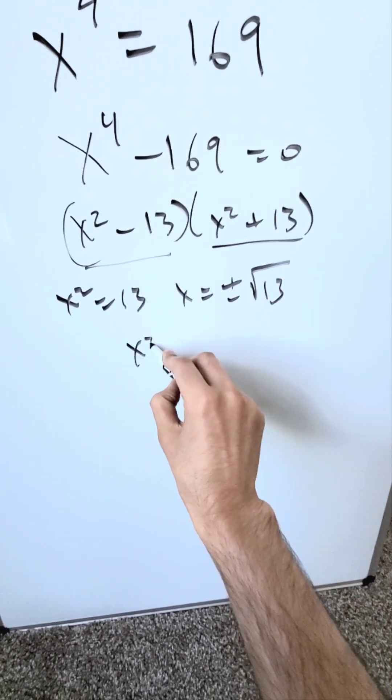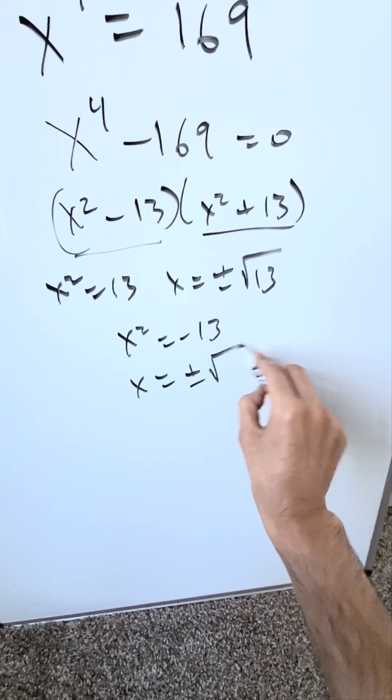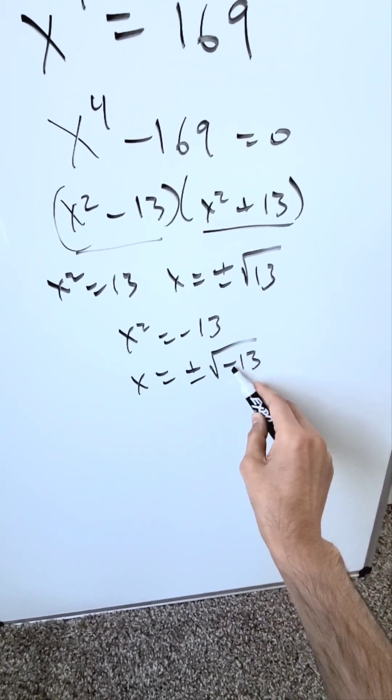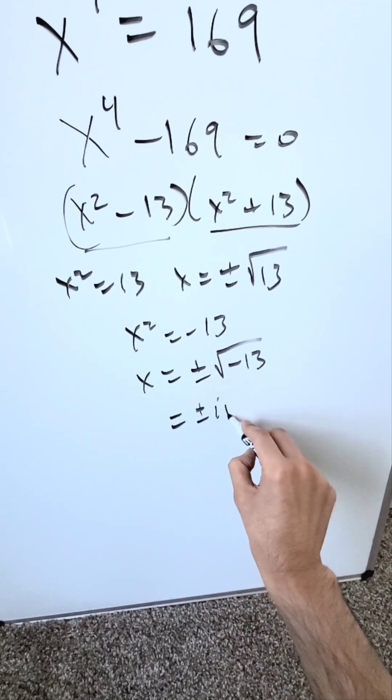Now come over here. I have x squared is equal to minus 13 and x is equal to plus and minus square root of minus 13. The minus will come out as an i. I have over here plus and minus i root 13.